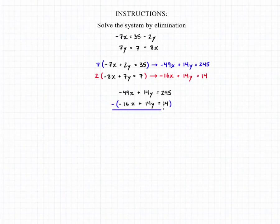So if we subtract our two equations being careful with our negatives we'll end up with negative 33x plus 0 is equal to 231.